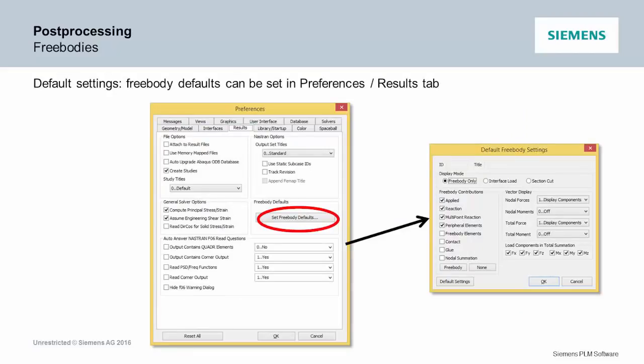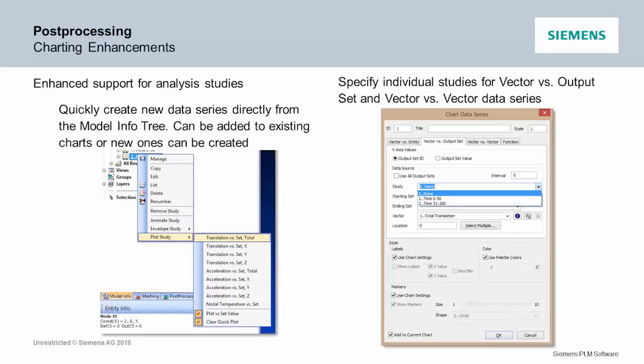For free bodies, there are some options when you set up any new free body. The defaults are usually the right ones for just making a free body, but if there's something special you need, you can now set the defaults so that each time you create a free body it gets the options you want. It's a small but useful usability enhancement.